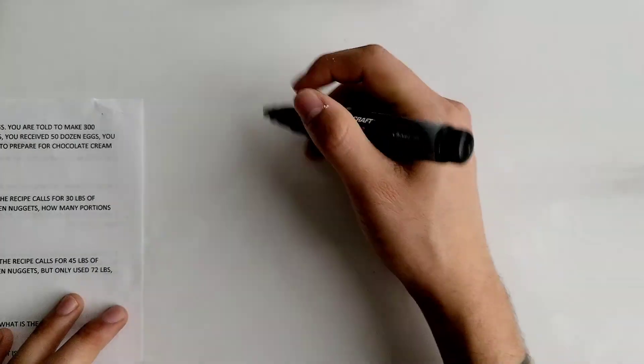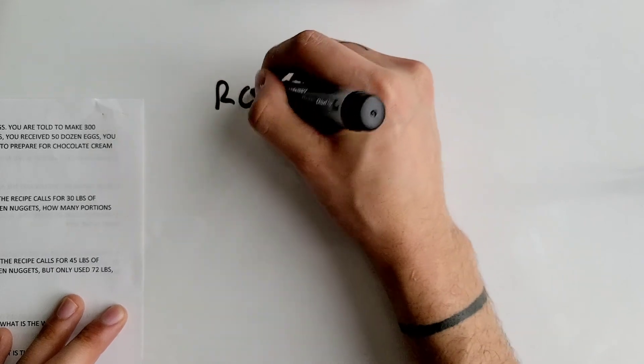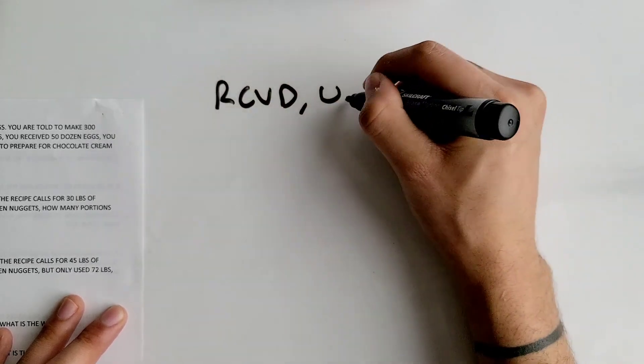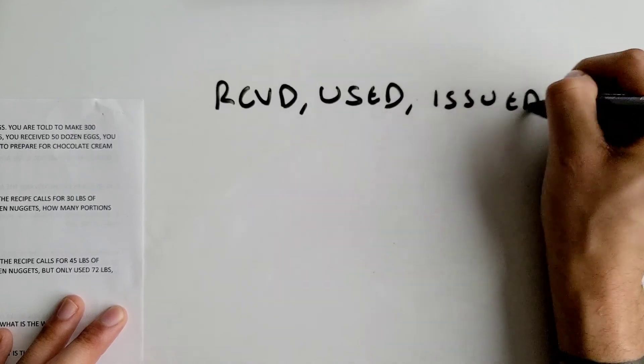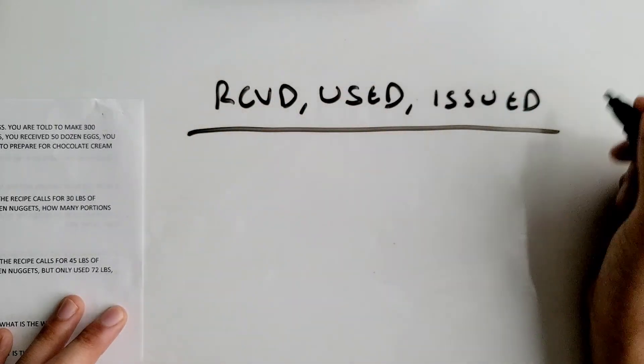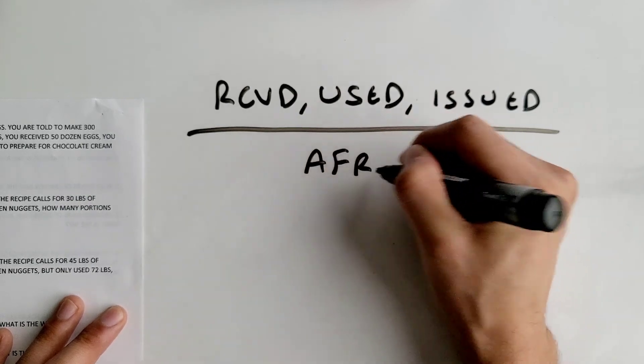You have your RCVD (received), or used, or issued - those are the keywords for this one in particular - and divide that all by your AFRS, which is what your recipe calls for.